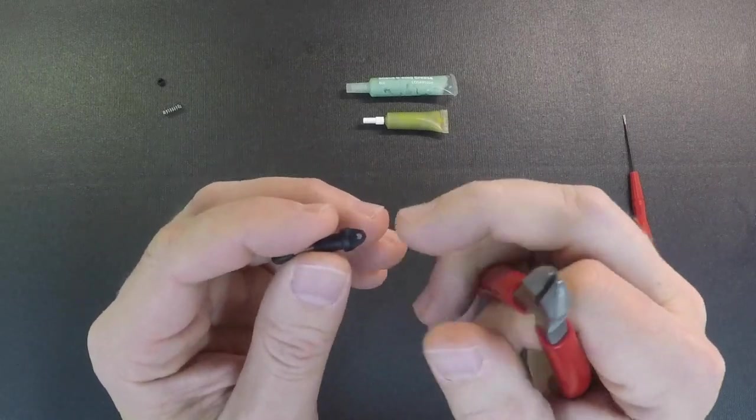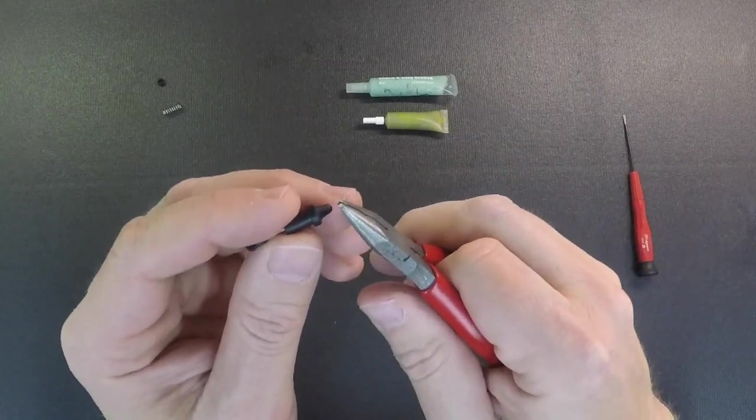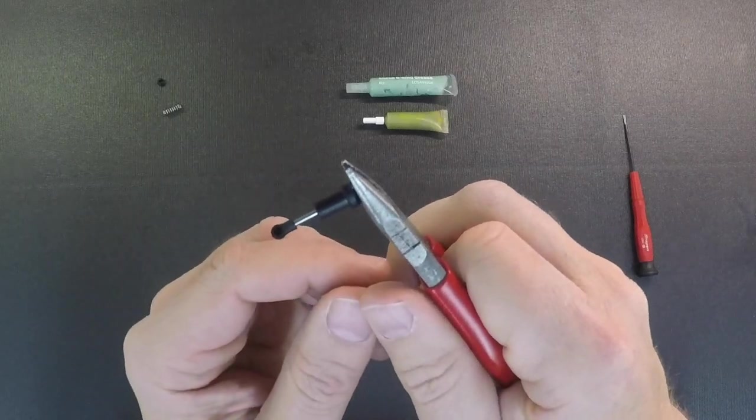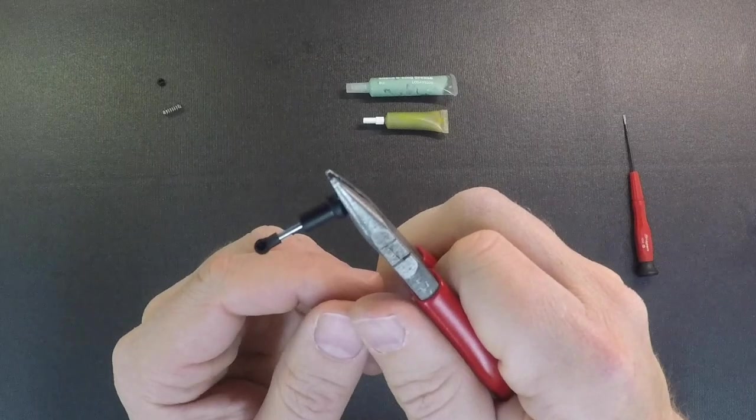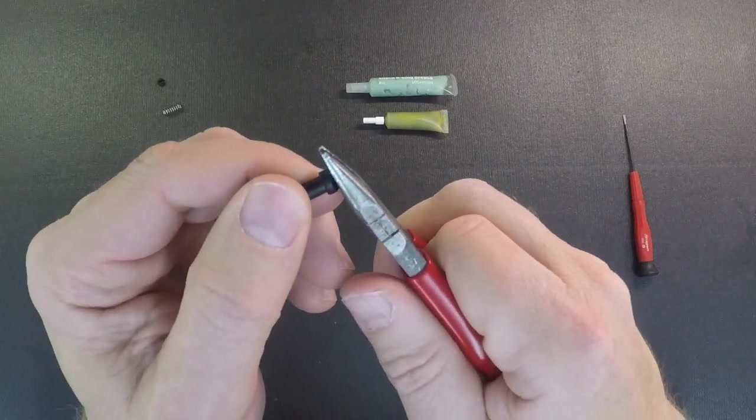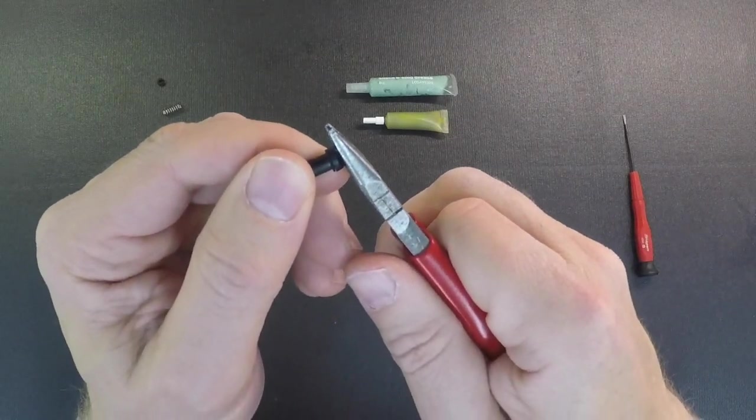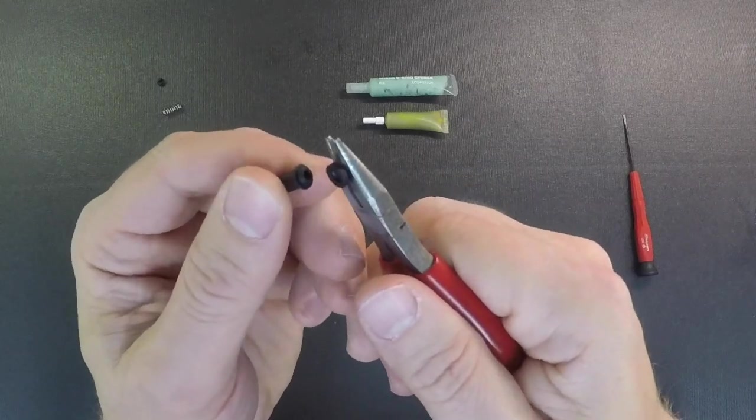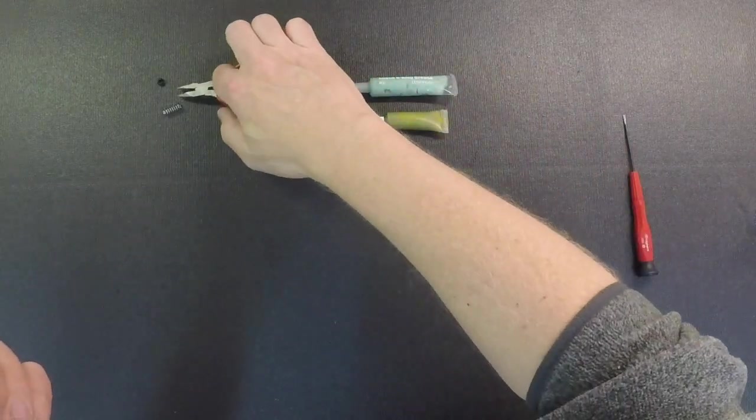We have the shock plastics available on our website if you need to replace those. To take the cap off the shock body, just grab the eyelet and then just push sideways on the shock body and the shock shaft, and it'll just pop the cap right off. It's just a snap fit.